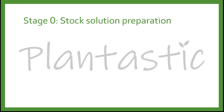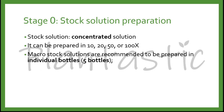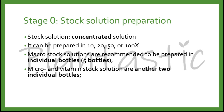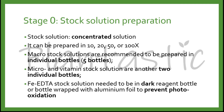Let's prepare the media step by step. For the stock solution preparation: stock solution is a concentrated solution, which can be prepared at 10, 20, 50, or even 100 times concentration. For a macro stock solution, they are recommended to be prepared in individual bottles, meaning you will have 5 bottles to prevent precipitation. For micro and vitamin stock solutions, there will be another 2 individual bottles. For iron stock solution, it needs to be in a dark reagent bottle or wrapped with aluminum foil to prevent photo-oxidation. So total: 5 + 2 + 1 = 8 bottles.